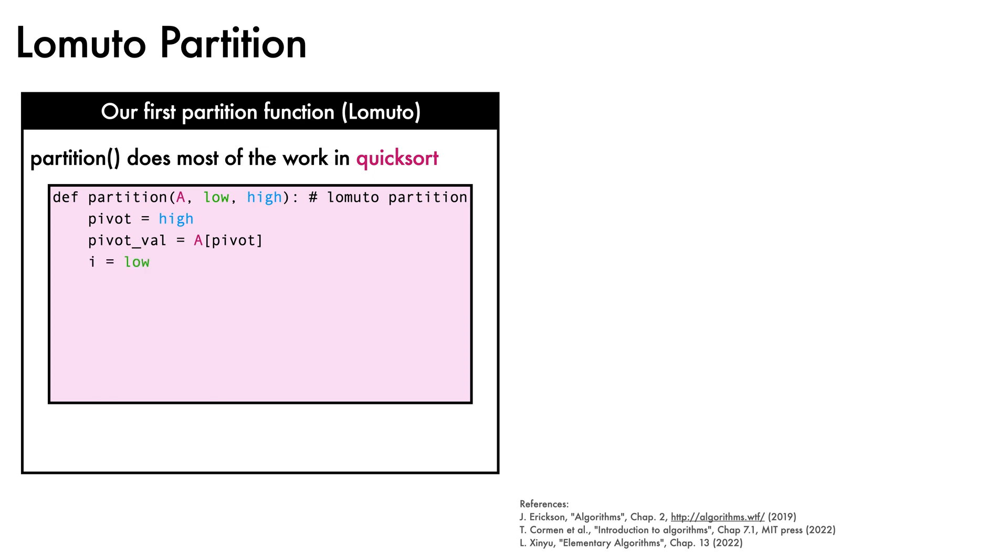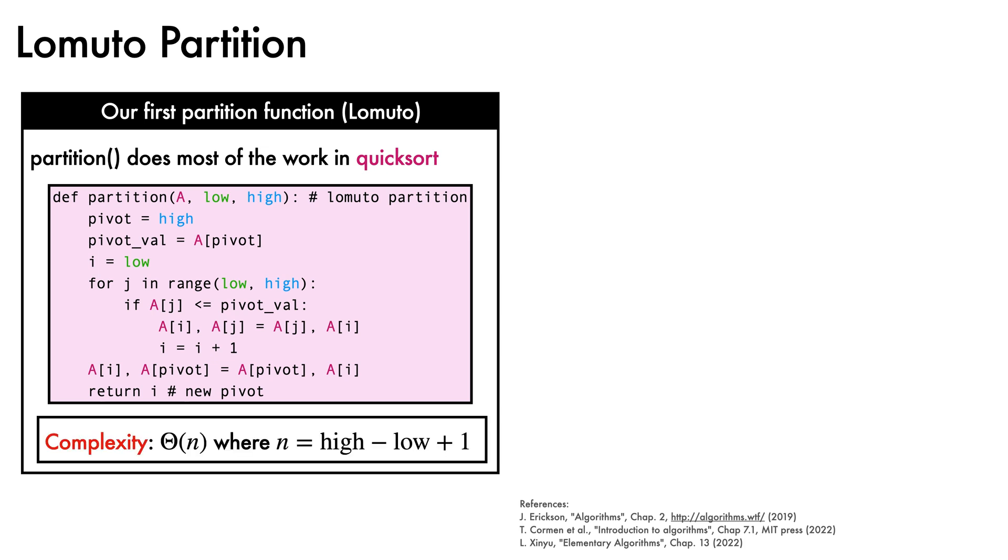Next, an index variable i is initialized to point to the low end of the array. We then loop a further variable j from low to high, in each case checking if aj is below the pivot value. If it is, we swap ai with aj, and increment i by 1. Once the for loop exits, i now takes the place of the new pivot, so we swap the elements of a at i and the pivot, and return i as the new pivot. The complexity of this function is big theta of n, where n is the number of elements in the subarray thanks to the for loop that runs from low to high.